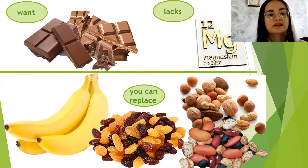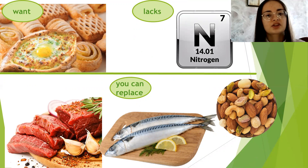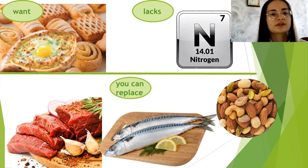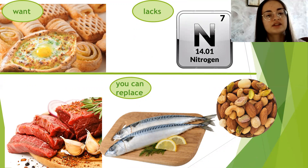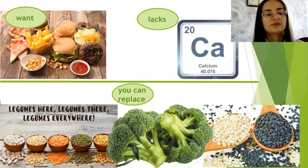Magnesium can be replaced by adding bananas, raisins, nuts, and beans. If you want bakery products, the body likely lacks nitrogen. Nitrogen can be replaced by using high-protein foods such as meat, fish dishes, and nuts. If you crave fatty foods, this can indicate a calcium deficiency.